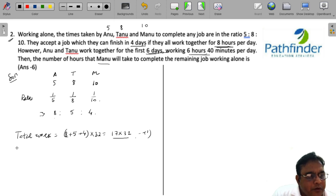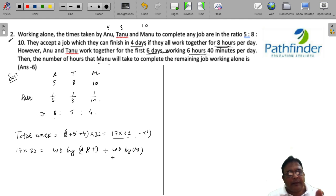So we can say that the total work, 17 into 32, is work done by Anu and Tanu first plus work done by Manu. This is the most elementary form of the equation, which means 17 into 32. Work done by Anu and Tanu is their rates, 5 plus 8, multiplied by the number of hours for which they have worked.